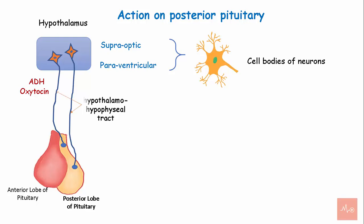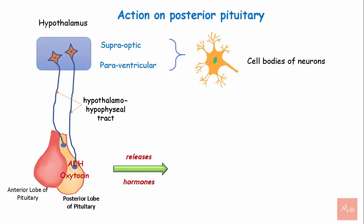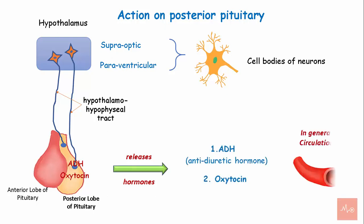They are transported to the posterior lobe of the pituitary through the hypothalamo-hypophysial tract and are stored there. When the hypothalamus sends a signal to the posterior lobe of the pituitary gland, the antidiuretic hormone and oxytocin are released into circulation.